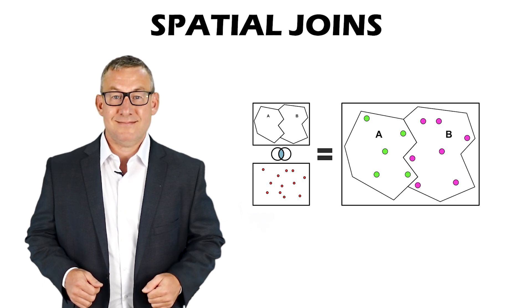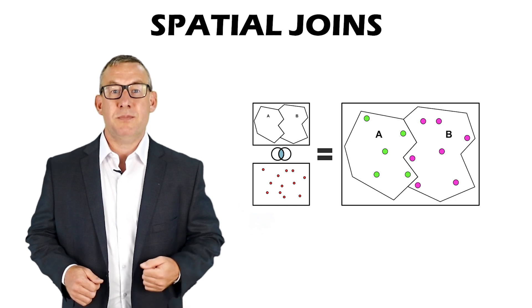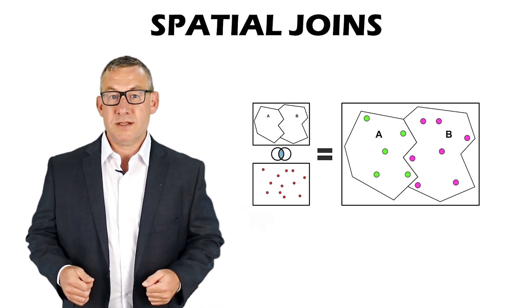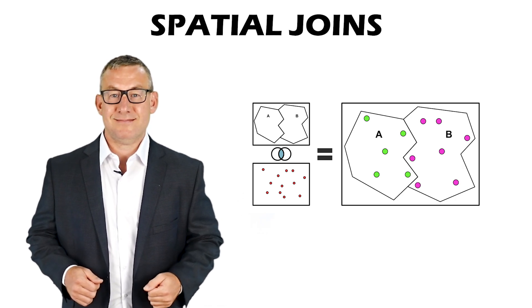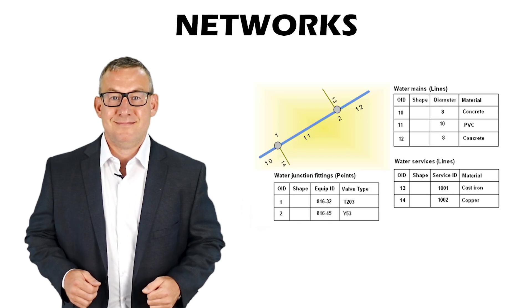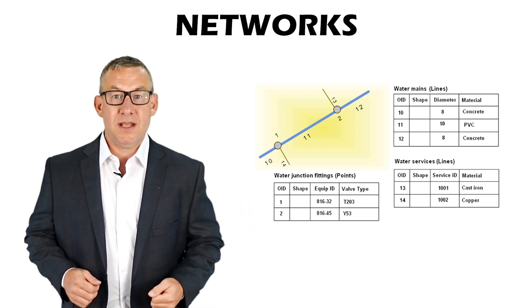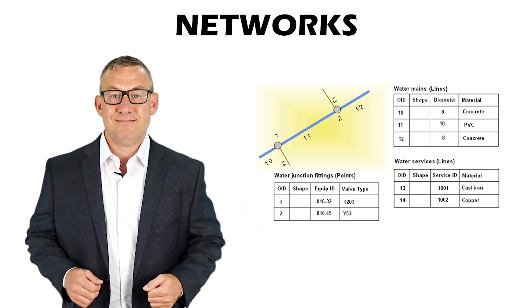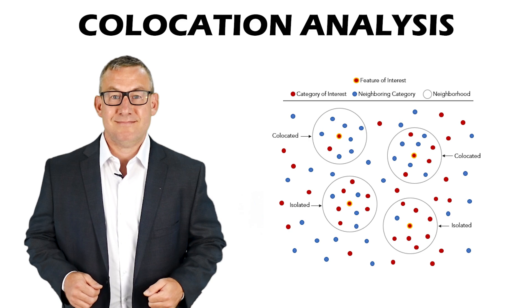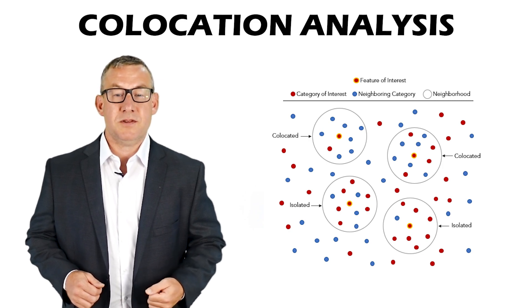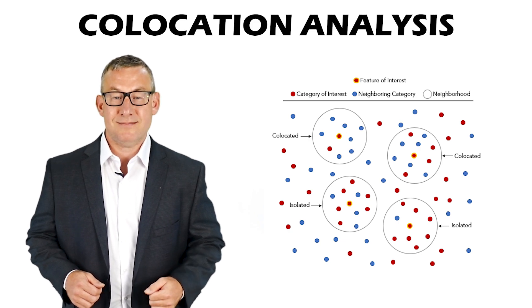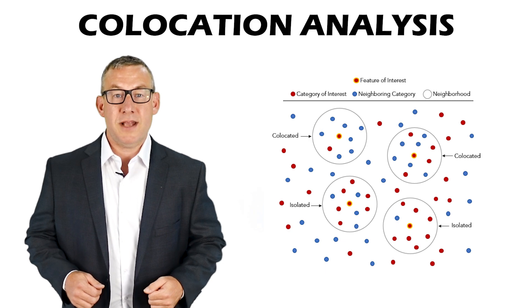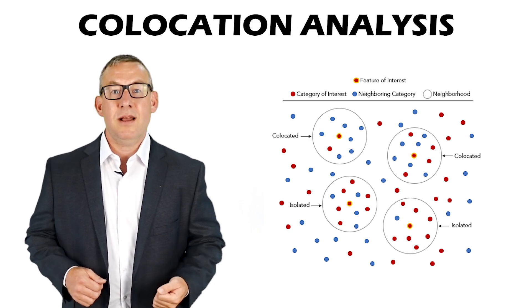Spatial Joins — spatial joins connect or join data based on their spatial relationship; for instance, associating census data with administrative boundaries. A Network — a network is an interconnected set of points and lines that represent routes, also known as geometric networks and network datasets. Co-location Analysis — co-location analysis examines local patterns of spatial association between two categories of point features and quantifies how often certain features occur together in proximity.